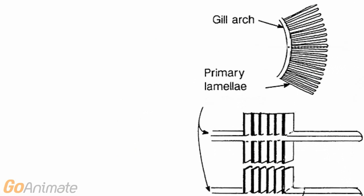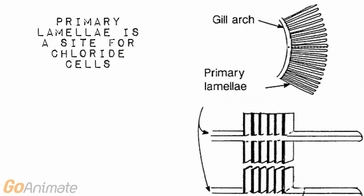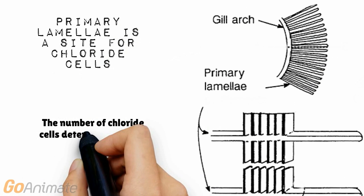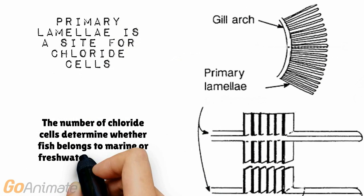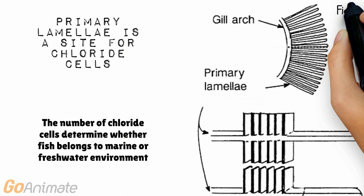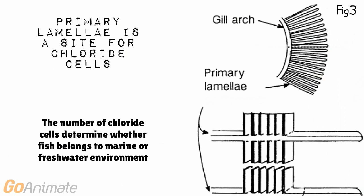The primary lamellae is the site where the chloride cells are located. This determines whether the fish belongs to the marine environment or freshwater environment. Freshwater fish have more chloride cells than seawater fish in order to keep the sodium levels high.